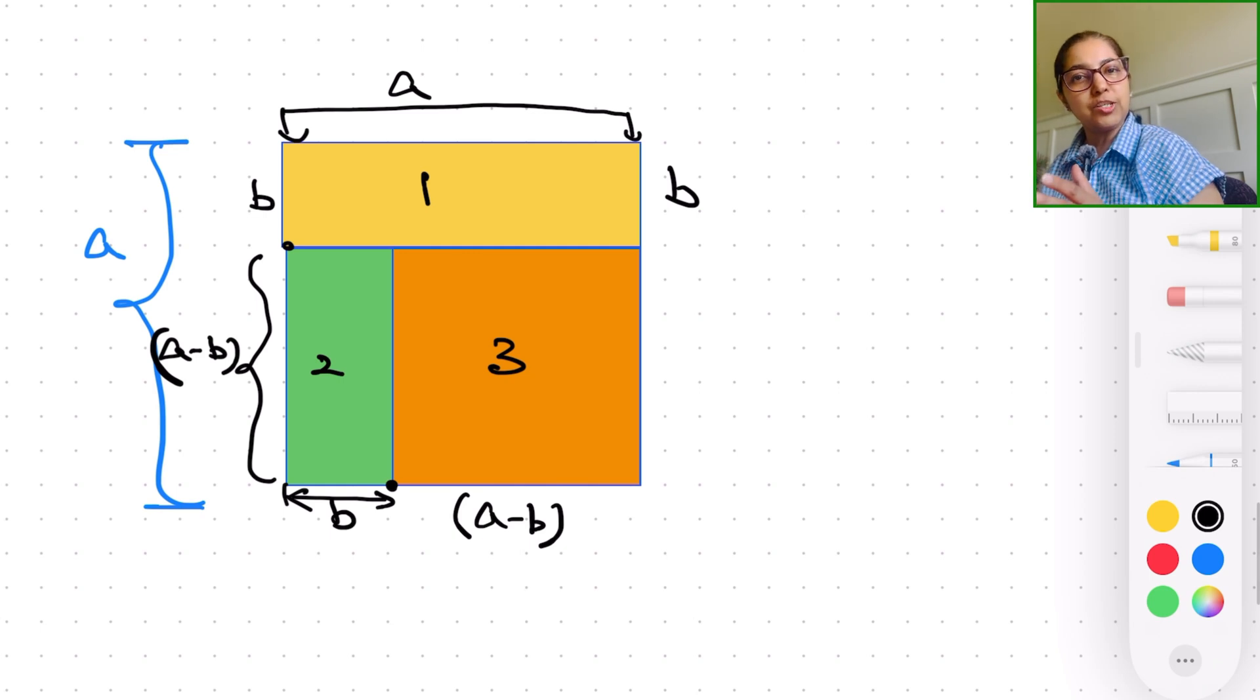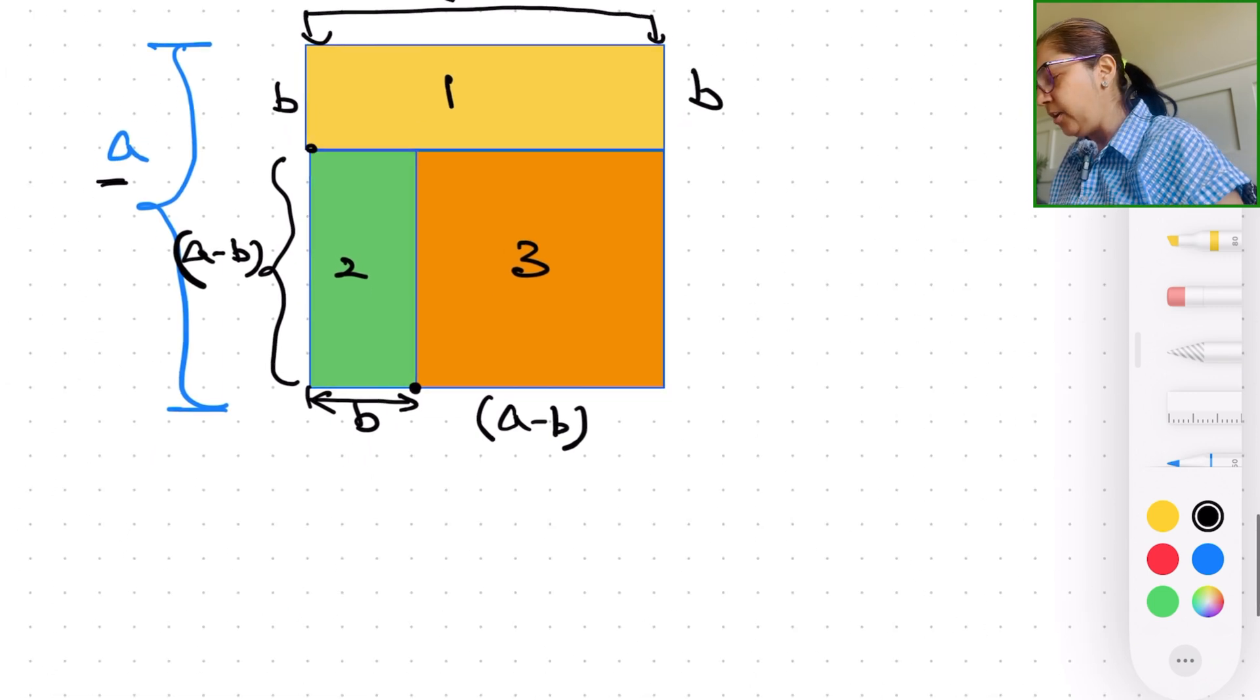Again, for this, we're going to consider a big square of side length a. And we're going to decompose or disintegrate this big square into three small shapes of squares and rectangles, which I've already done on the screen, as you can see. And so the idea again is the area of the big square should be equal to the summation of the areas of these rectangles and squares, right?